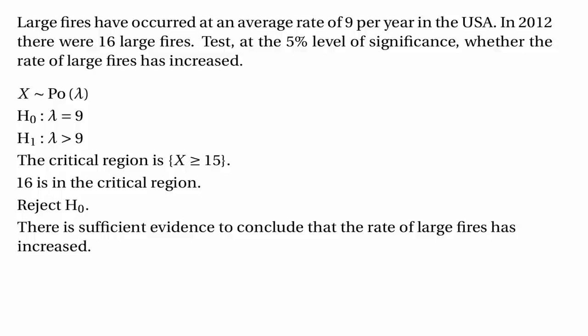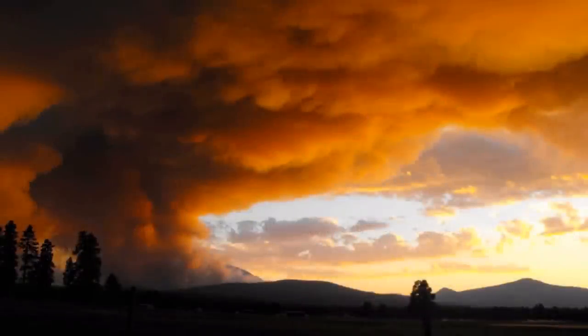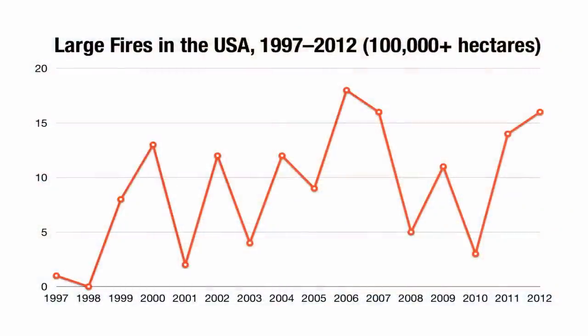Those are two ways of answering this question — two ways of carrying out the hypothesis test — and it's completely up to you which one you want to use. Before finishing this example, it's worth pointing out that an increased rate of fires is one predicted outcome of climate change, so it's interesting to know what's been happening to the rate of large fires in America. Here's a graph showing the number of large fires each year for the last decade or so.